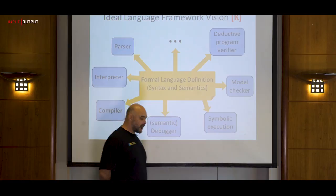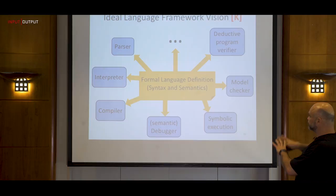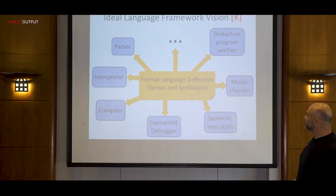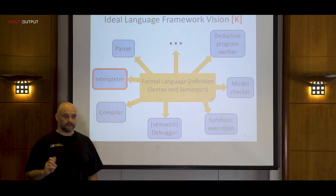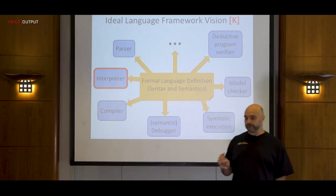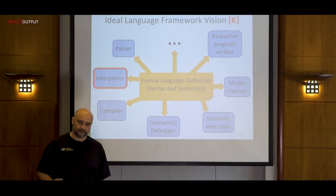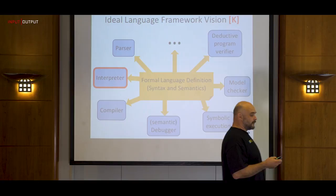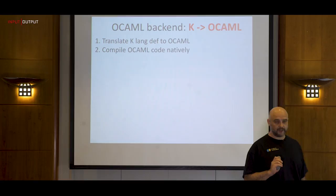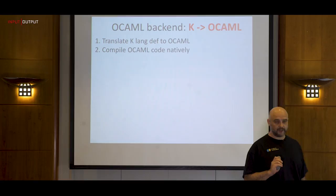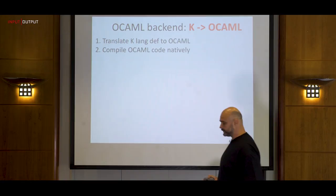I'll now show how we approach generating tools from a formal semantics, starting with the interpreter — by far the most used tool. Each time you define a language, you immediately want to test it: parse some programs, execute them, check the results. In K, we currently have a translator from K to OCaml, and then compile the resulting OCaml natively to get an interpreter. So the pipeline is: K → OCaml → native binary.